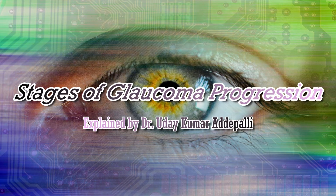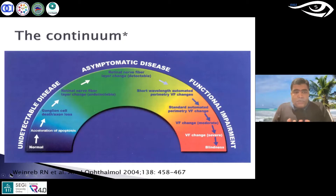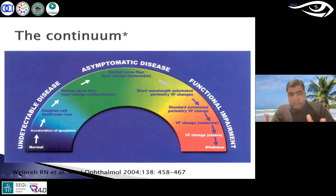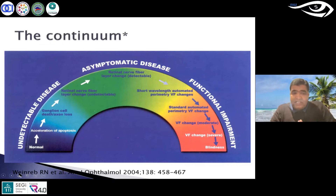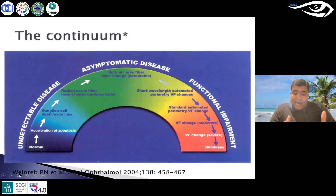This slide shows the continuum of the disease glaucoma, representing three different stages: starting from the undetectable stage, through asymptomatic, to a stage where there is functional impairment. It is difficult to detect the disease in the undetectable stage.